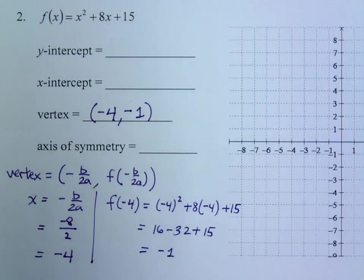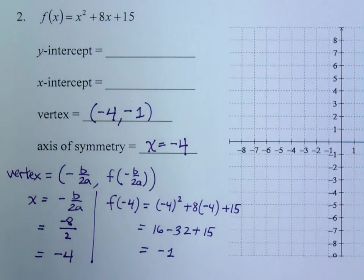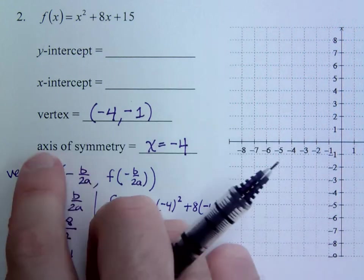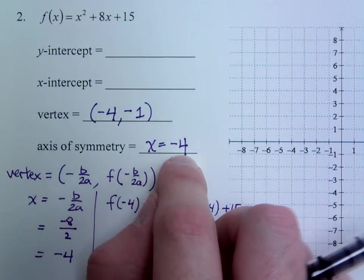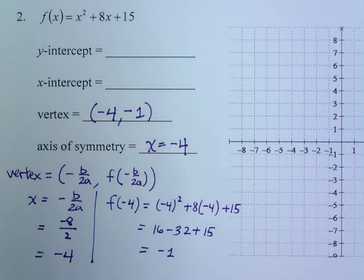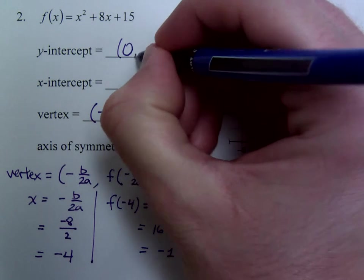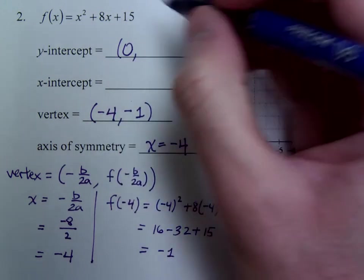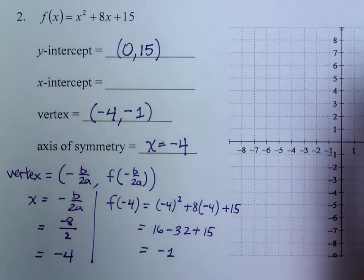So if that's your vertex, your axis of symmetry just kind of falls out from that. So x would equal negative 4. Remember the axis of symmetry is a line. So you must give it as an equation of a line. In this case x equals negative 4. To find your y-intercept, plug in x is 0. When x is 0 you get 15. Kind of a bummer because that doesn't fit on my graph.